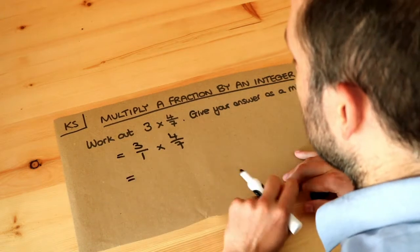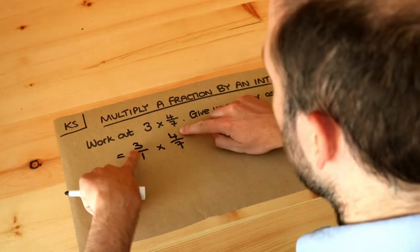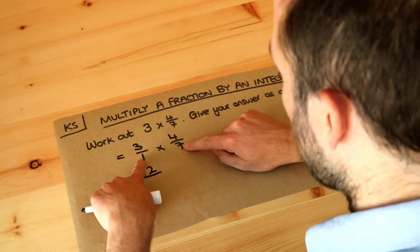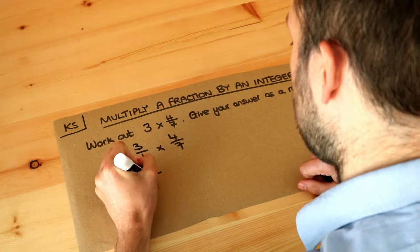And now we can just multiply these fractions in the usual way. We multiply the numerators, so 3 times 4 is 12. And we multiply the denominators, 1 times 7 is 7.